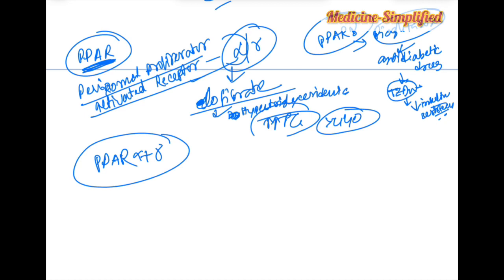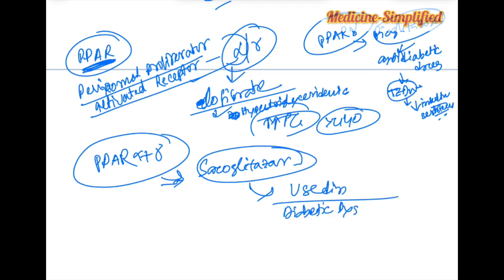So now a new drug has been achieved, a new drug has been discovered or invented, that is PPAR alpha plus gamma action. It can simulate both the receptor, that is saroglitazone, and it is used in anti-diabetic drug. Just remember this.